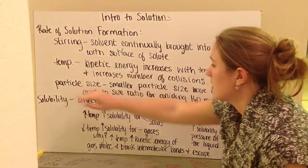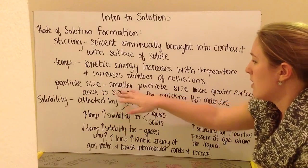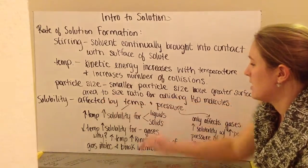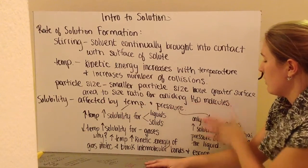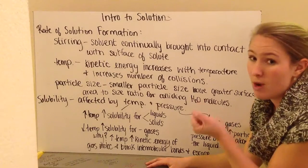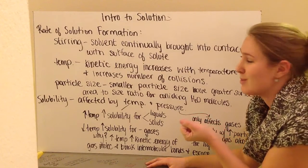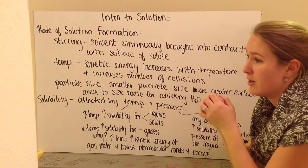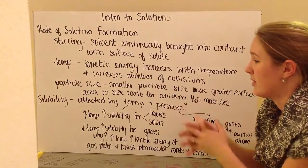And again, the particle size. So, the smaller the particle size, they're going to have a greater surface area to size ratio for the colliding water molecules. So, a smaller molecule, a smaller particle, is going to have more surface area around it than a larger particle compared to the actual size of that particle.